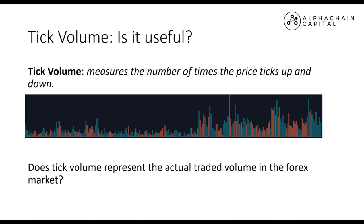As we can see on the slide, the definition is it measures the number of times the price ticks up and down. That's obviously not the same as traded volume — traded volume is how much is actually traded. The assumption with tick volume is that if prices change 100 times in five minutes, there's higher activity than if prices change only 50 times, and this should reflect the corresponding change in trading volume.